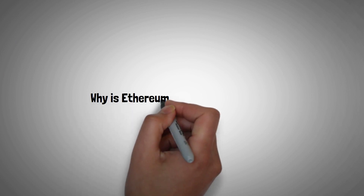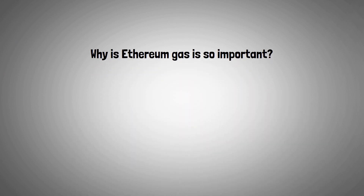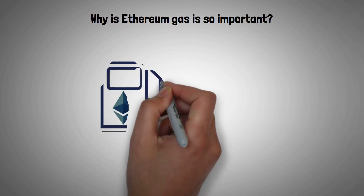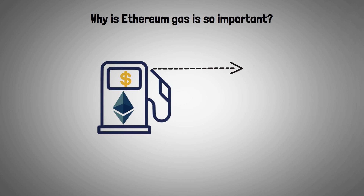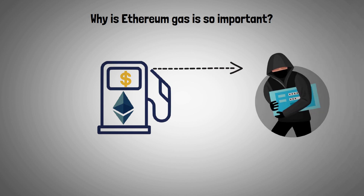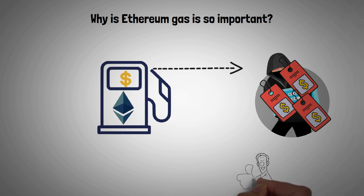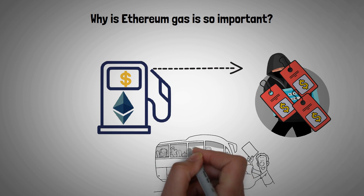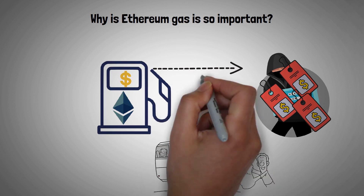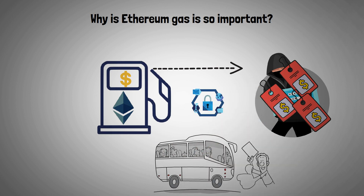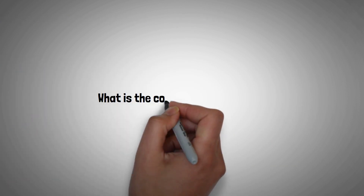Now let's explore why Ethereum gas is so important. While gas fees add to the cost of making a transaction on Ethereum's platform, they serve an important purpose — they make Ethereum city safer for its residents. Requiring a fee for each transaction makes Ethereum a less attractive target for hackers who may try to spam the network with requests. It's like having a ticket system for city buses to prevent overcrowding, improving cybersecurity and helping the network run more efficiently.